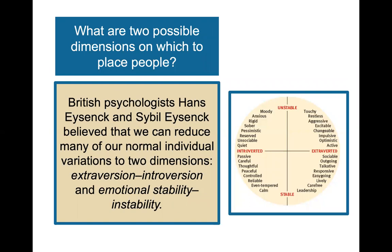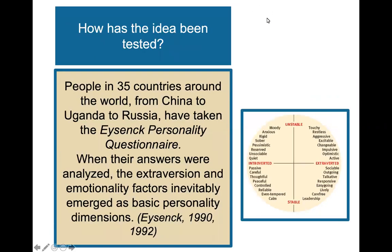Two other famous theorists, Hans Eysenck and Sybil Eysenck, believed we could reduce many normal individual variations into two dimensions: the extraversion-introversion dimension and the emotional stability versus instability dimension. People in 35 countries — from China to Uganda to Russia — have taken the Eysenck Personality Questionnaire, and when their answers were analyzed, extraversion and emotional stability inevitably emerged as basic personality dimensions across cultures.